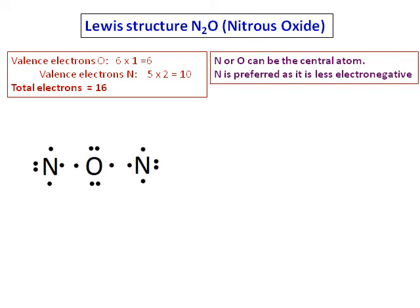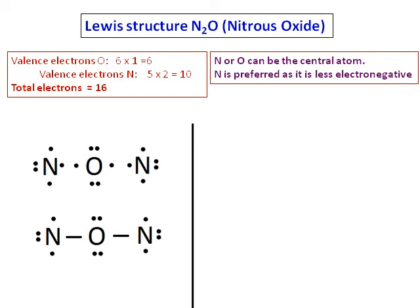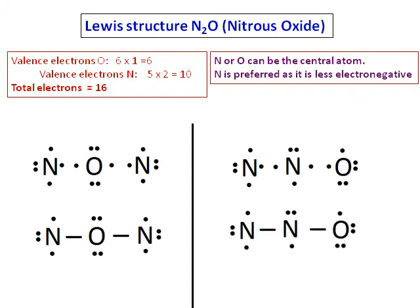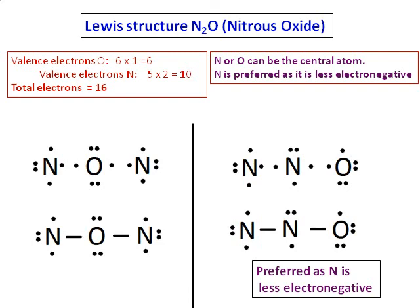nitrogen or oxygen can be the central atom. We prefer the structure where the central atom is less electronegative. Let's draw both structures: one with oxygen as central atom and one with nitrogen. The structure with nitrogen as central atom is preferred because nitrogen is less electronegative.